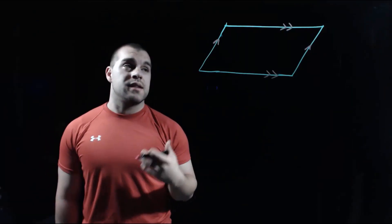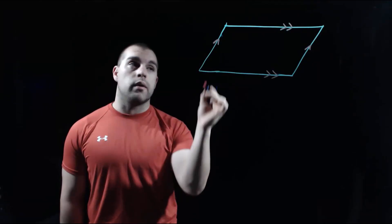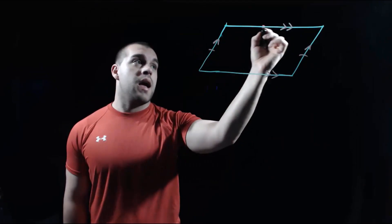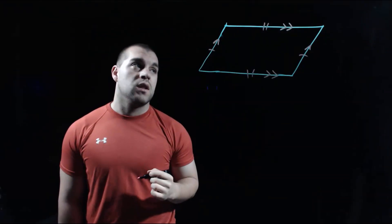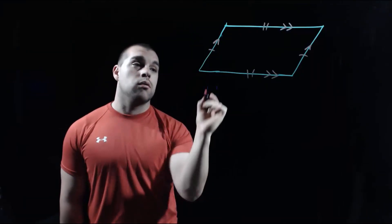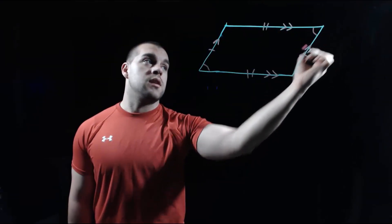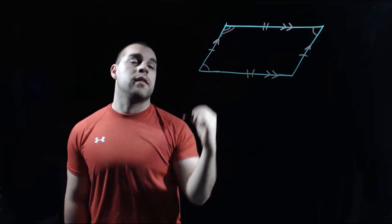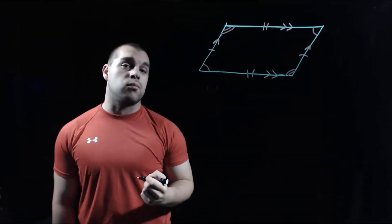Our next property says that along with the opposite sides being parallel, they also have to be congruent. So I'm going to put a congruence dash mark on the left and right sides, and two congruence dash marks on the top and bottom. Opposite sides are congruent, but also opposite angles are congruent — this acute angle down here is congruent to the acute angle in the top right corner, and the obtuse angle in the top left is congruent to the obtuse angle in the bottom right.